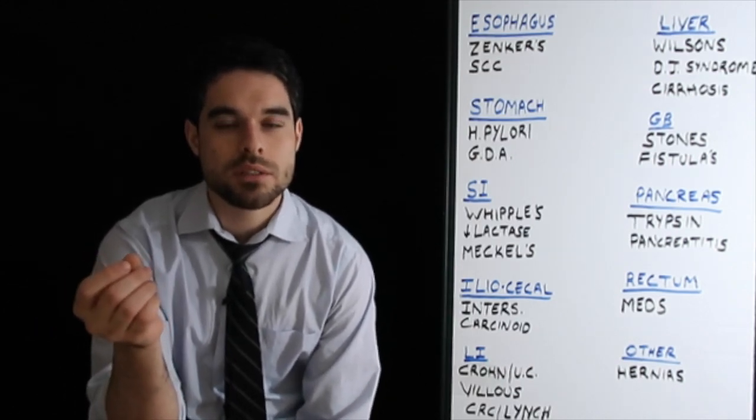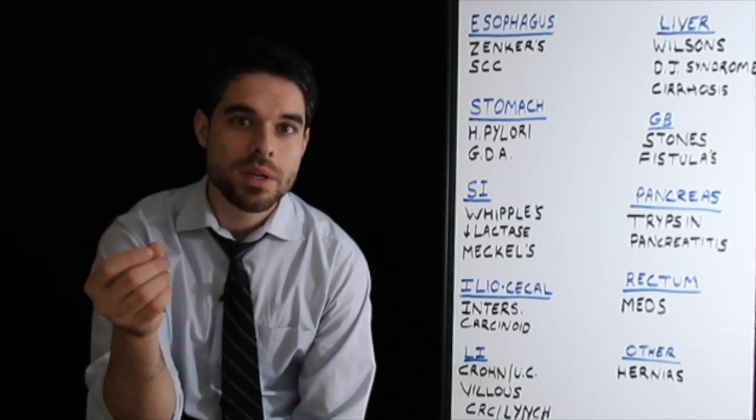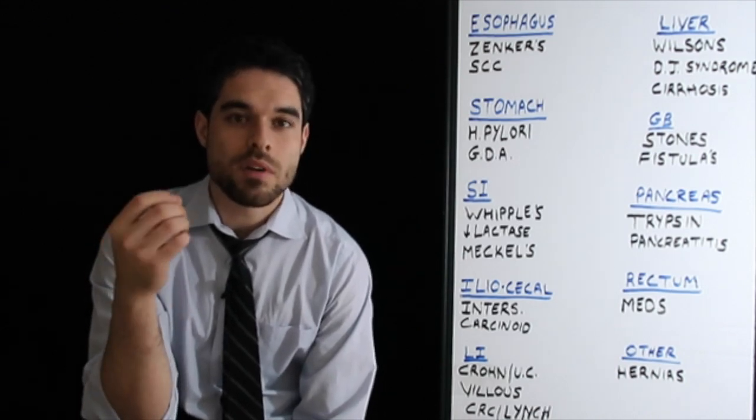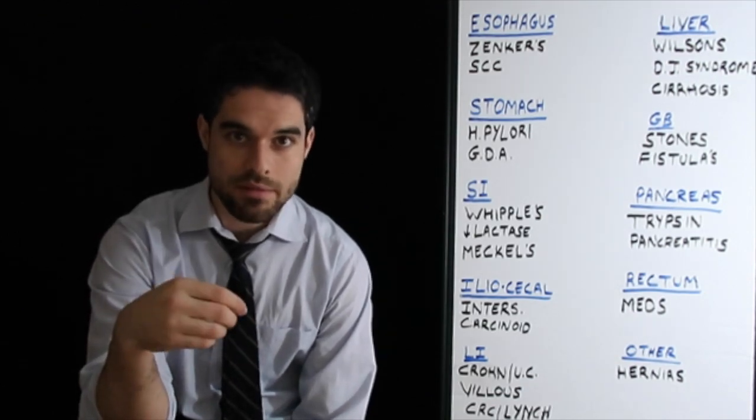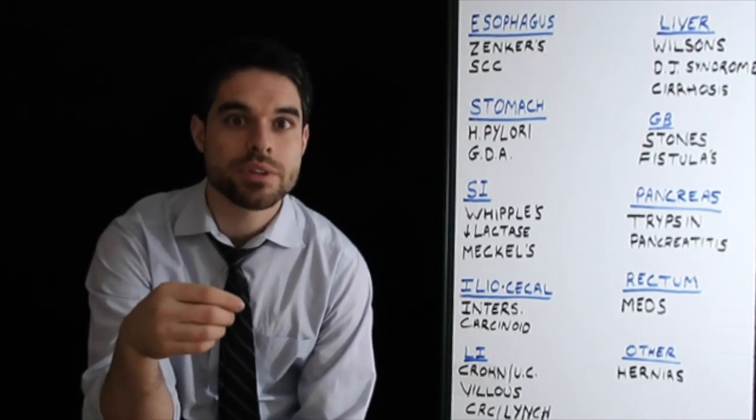Also in the small intestine is where you'd see your Meckel's diverticulum. It's a true diverticulum. It's made out of all three layers. It comes from the mid-gut and this child's going to have painless bleeding and ectopic gastric tissue.